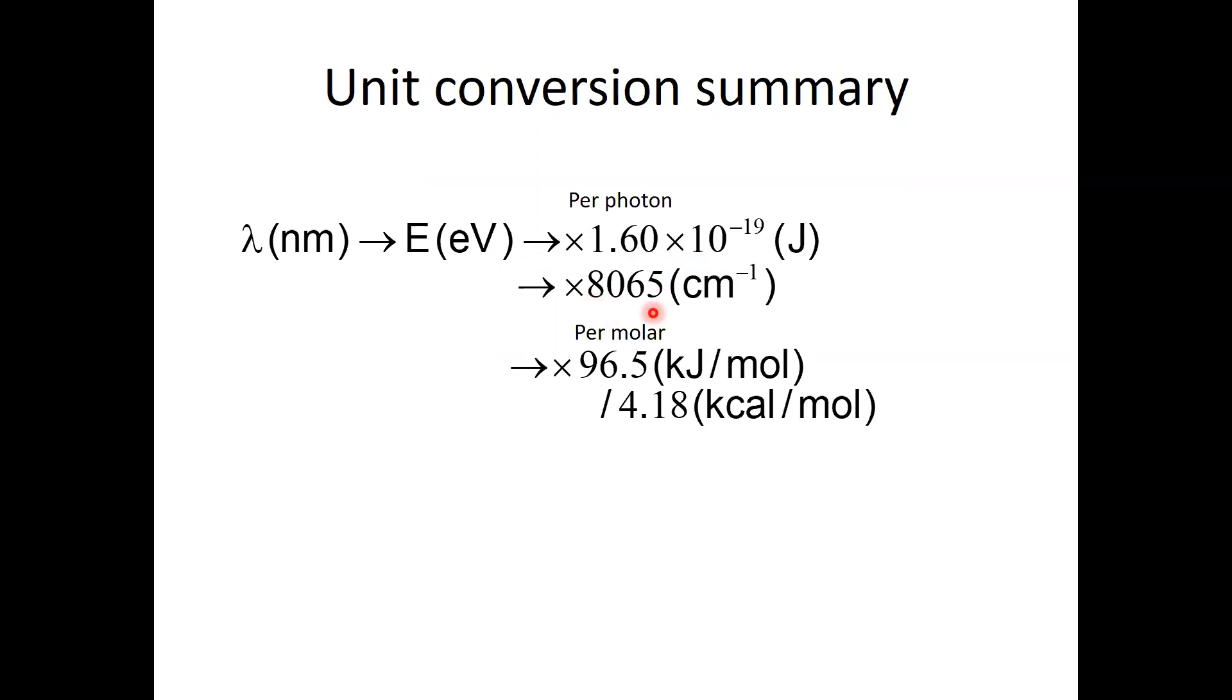And if you want to know the energy in Kaiser, you just multiply about 8,000. And if you need the energy in the kJ per mole, it's roughly 100 times of electron volt. And once you can obtain the kJ per mole energy, you can obtain kJ per mole divided by 4.2.